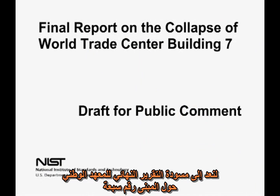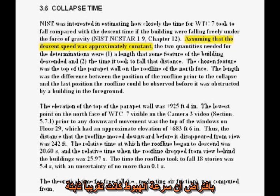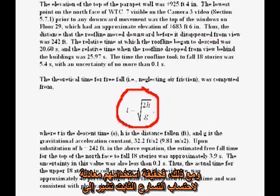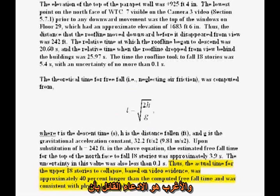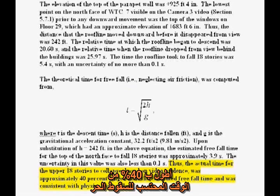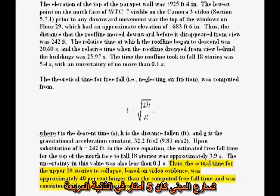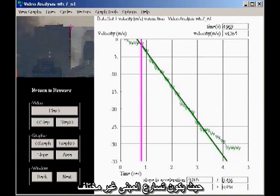Let's return to the NIST final report on WTC 7. On page 40, there is a phrase — quote — 'assuming that the descent speed was approximately constant' — unquote. This assumption is clearly false from even casual observation. However, the fact that they proceed to use a formula for constant acceleration clearly indicates the constant speed reference is a misstatement; they're actually assuming constant acceleration. More bizarre is their claim that the actual time for the upper 18 stories to collapse, based on video evidence, was approximately 40% longer than the computed freefall time. Working backwards from a 40% increase in fall time, their claim is equivalent to saying the building's acceleration is only 5 meters per second squared — 51% of the acceleration of gravity. Our results, however, clearly show a significant stretch of time in which the acceleration is indistinguishable from gravity itself — complete freefall.